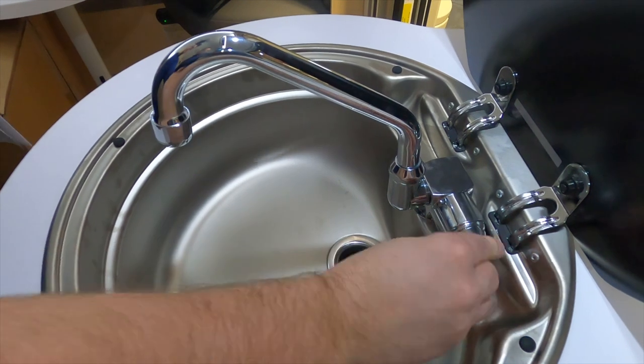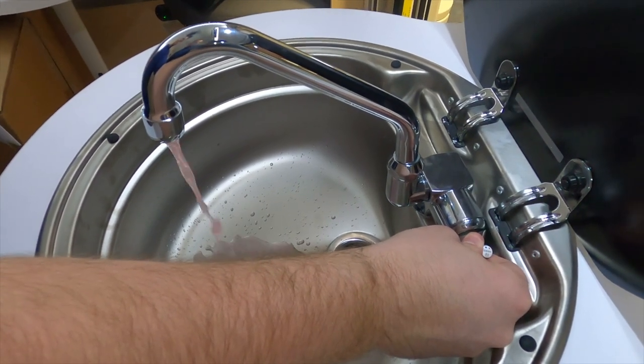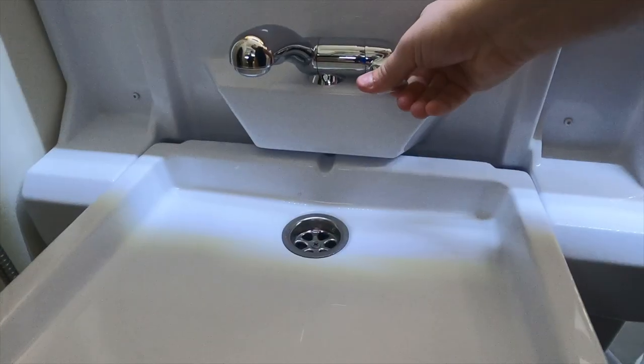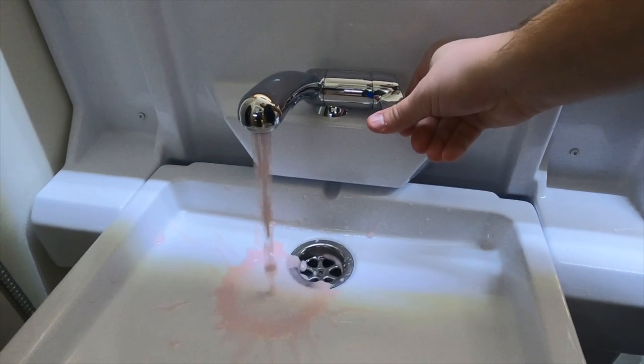Then we'll go to the inside of the camper and open each faucet and fixture until it runs pink. You'll want to open the faucets in the kitchen and the bathroom. Be sure to run both hot and cold.